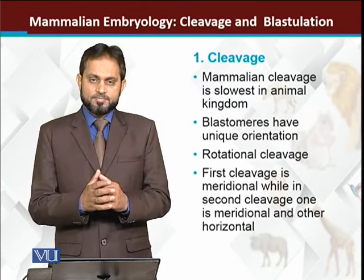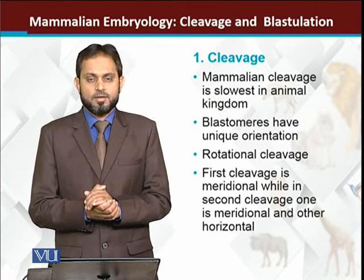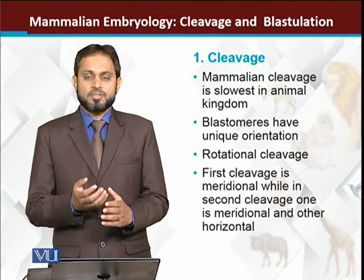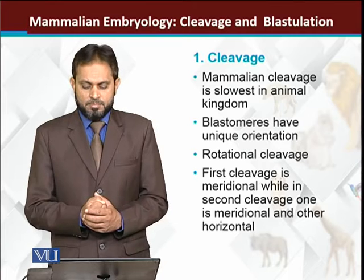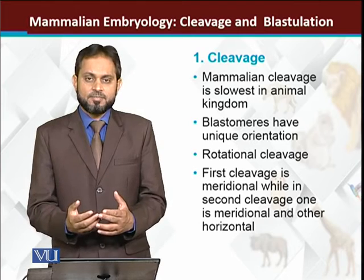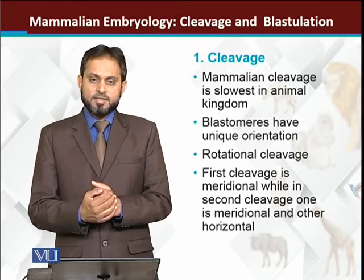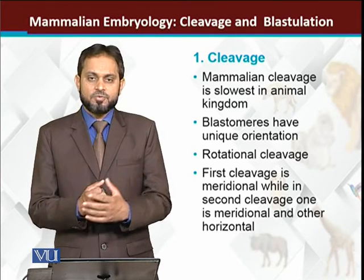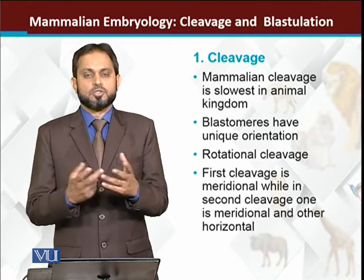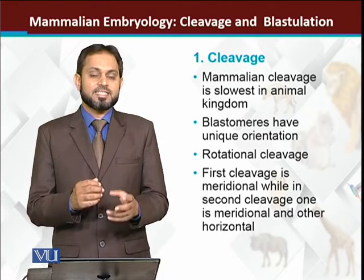Initially, the pattern of cell division in mammals is very, very slow compared to other animals. When the mammalian embryo starts to divide, its cell division is very slow. Additionally, the pattern of cell division is different from other groups of animals — there are unique features found in mammalian cleavage.